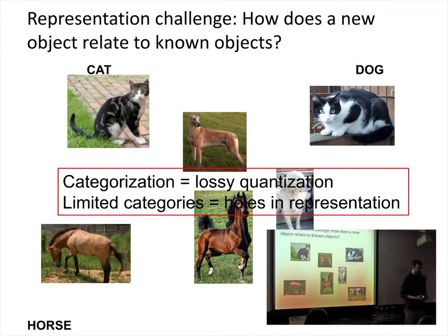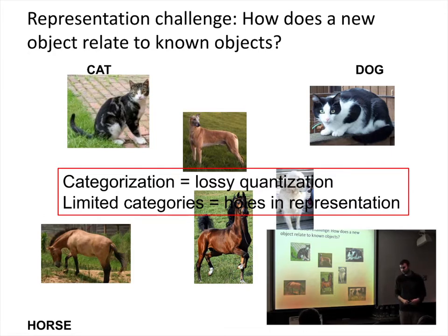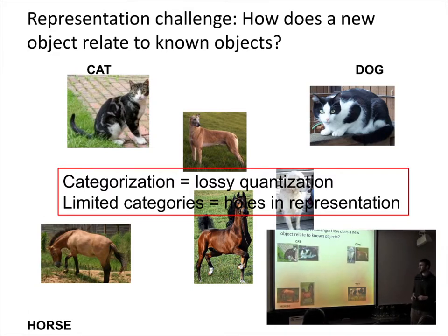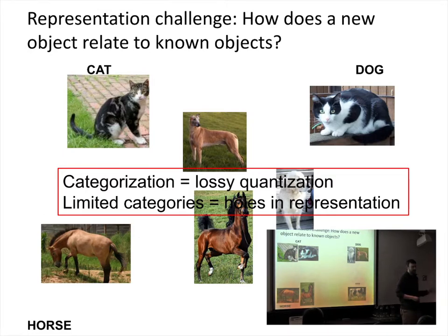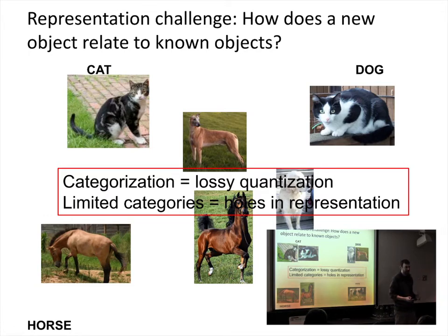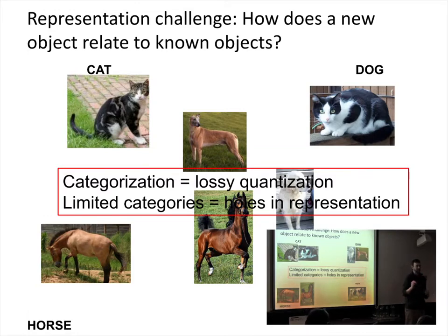One key challenge is representation: how does a new object relate to known objects? The categorization approach would sort images into different categories — cats, dogs, horses — and tells you something if you see a familiar object. But if you get some new object that doesn't fit into those categories, you're at a complete loss. Categorization is kind of a lossy discretization of a continuous space of natural objects. With a limited number of categories, you have complete holes in the representation — gaps where you have no ability to deal with those objects at all.